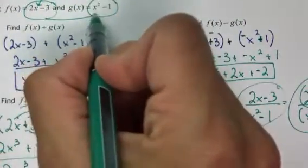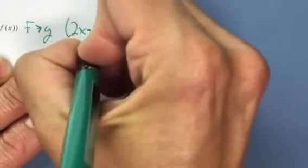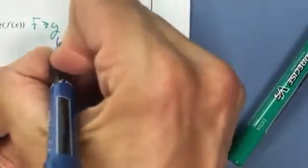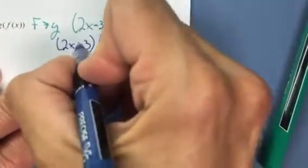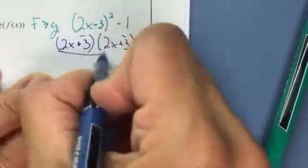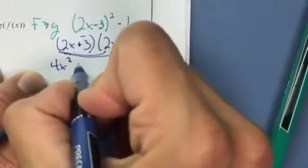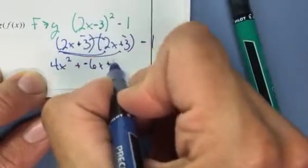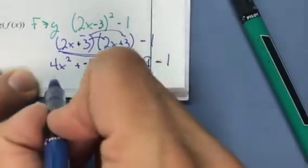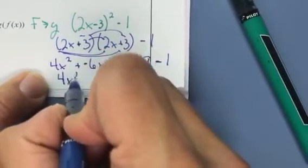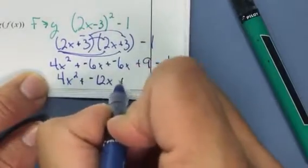For g∘f, f goes into g. Normally x is squared in g; now 2x - 3 is squared, with the -1 still there. (2x - 3)² means two copies: distribute to get 4x² - 6x - 6x + 9 = 4x² - 12x + 9. Subtract 1 to get 4x² - 12x + 8.